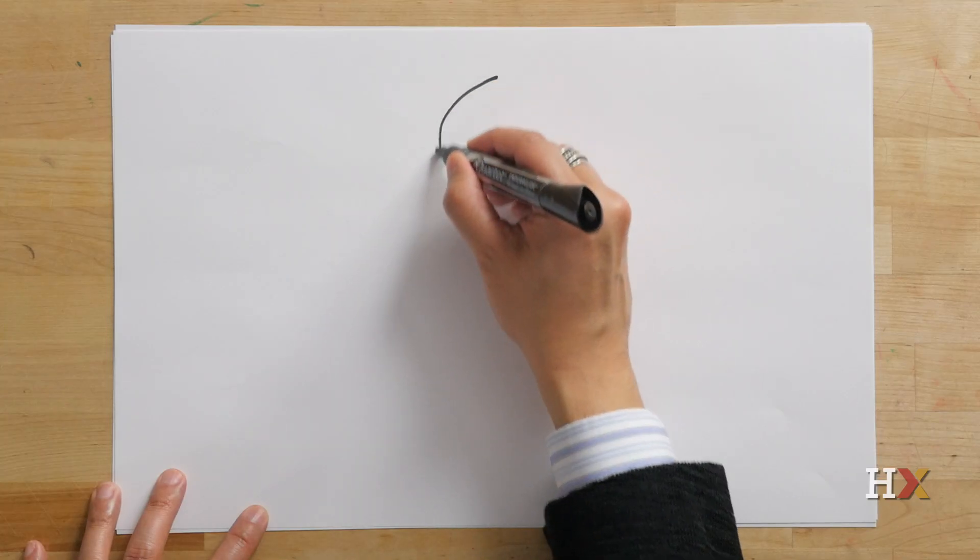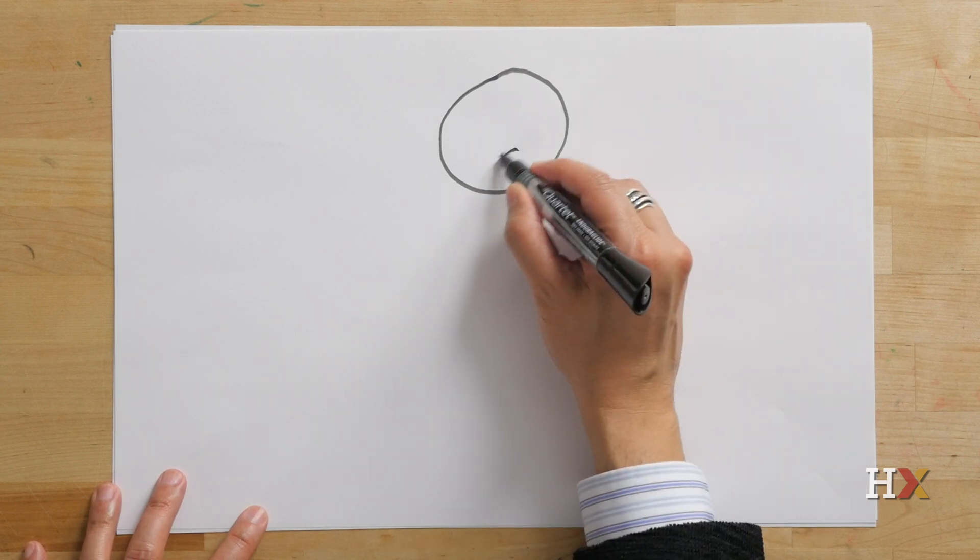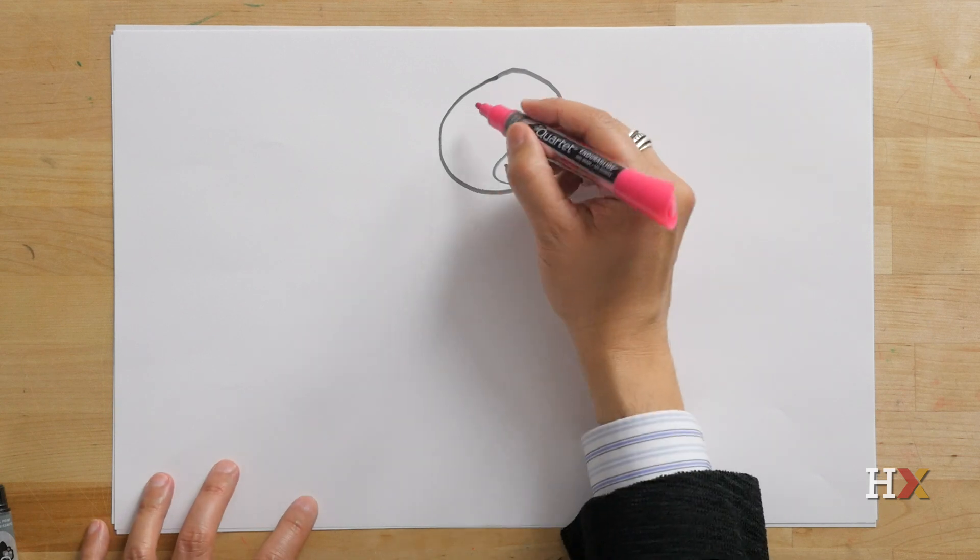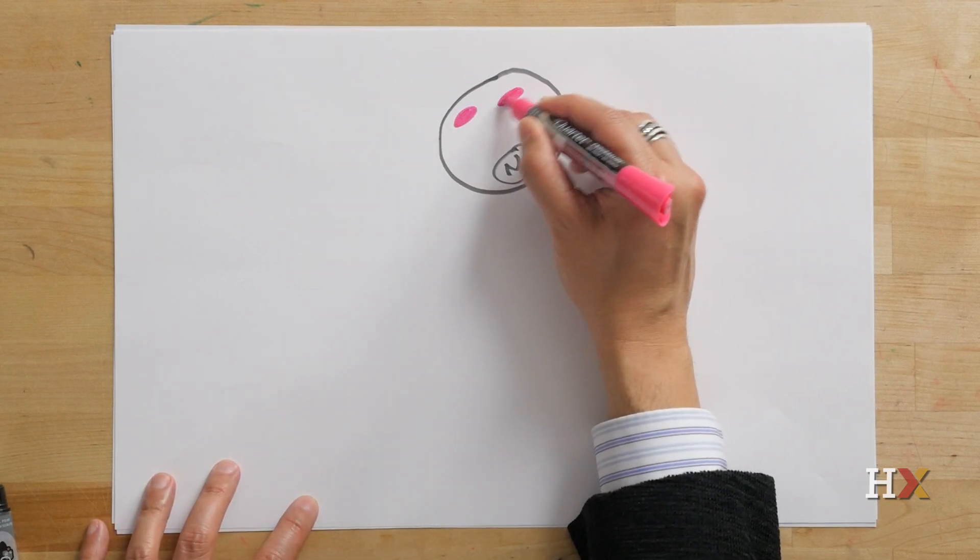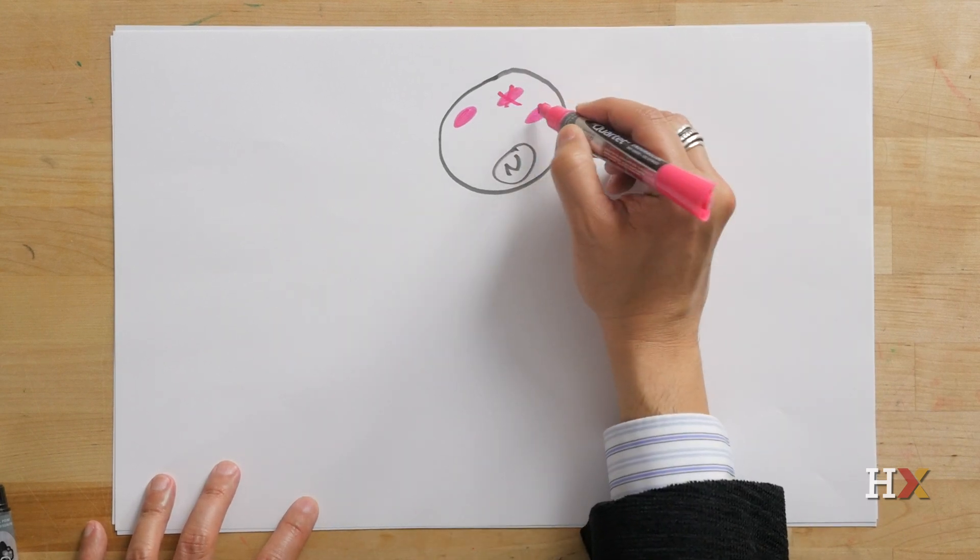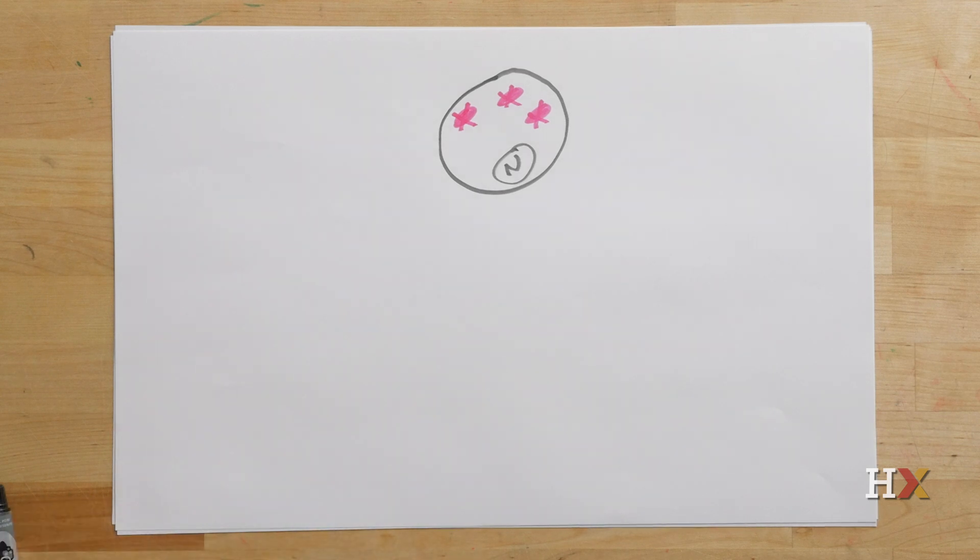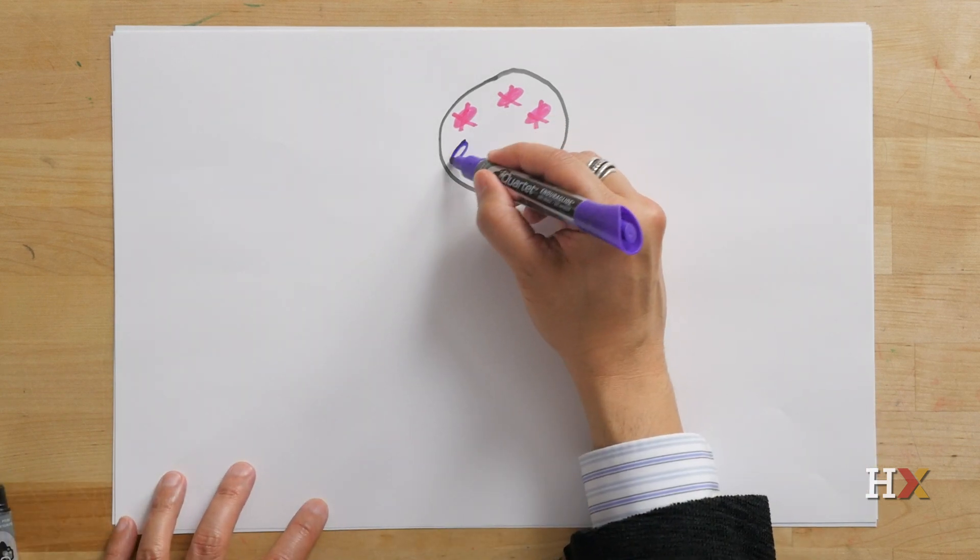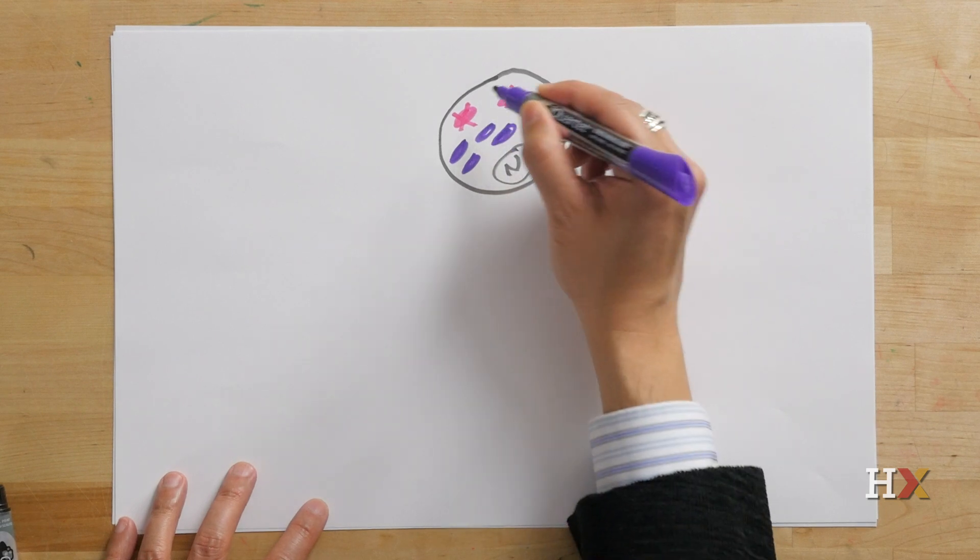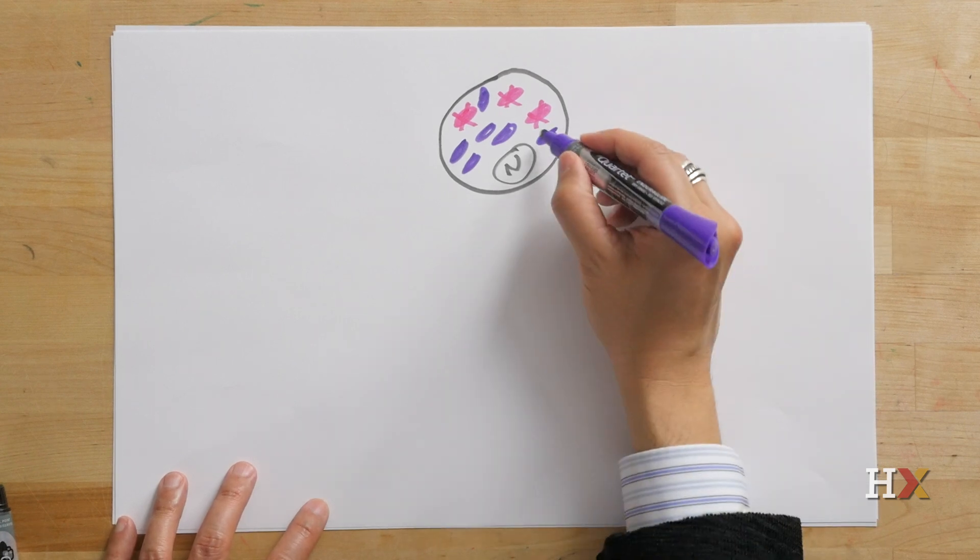So if we have a primordial egg cell, and here we have the nucleus of the egg cell, this particular egg may have let's say three mitochondria in pink that carry some sort of defect in their mitochondrial genomes. And then it may have let's say six, the equivalent of six mitochondria that are perfectly healthy.